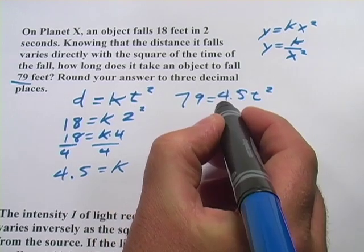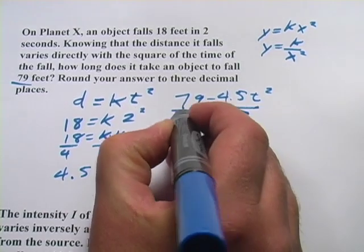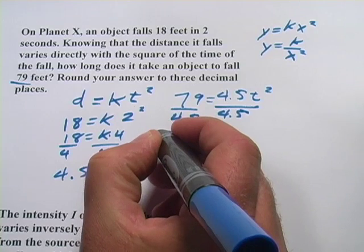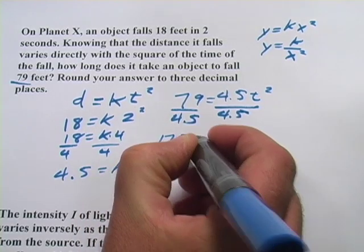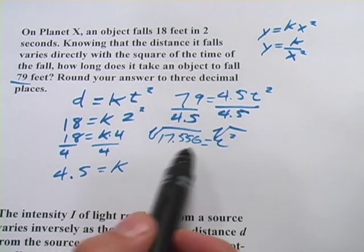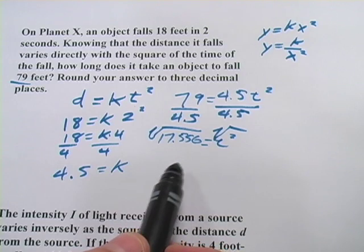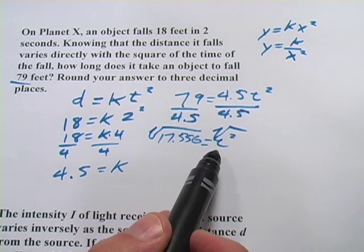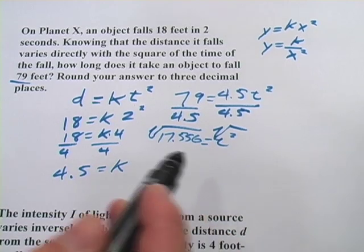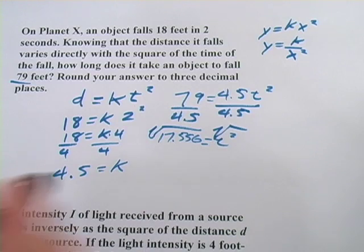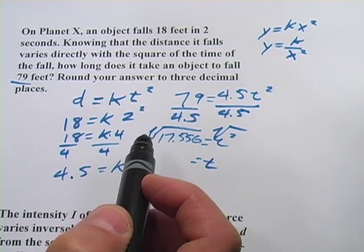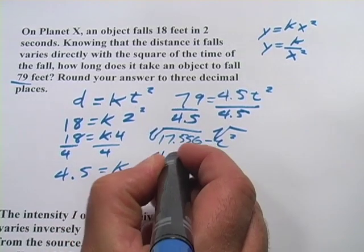And it's important we don't forget that squared there. So to solve for this, we're going to divide both sides by 4.5. And that is 17.556. And then to solve for t, we actually have to take the square root of both sides. And you might remember that when you take the square root, you get two answers, you get a plus or minus. But in this case, we're looking for time, and negative time doesn't really make sense. So we can just take the positive answer. So I'm going to take the square root of 17.556. And what I get is t equals, and let's see, they want three decimal places. So it looks like this would be 4.190.